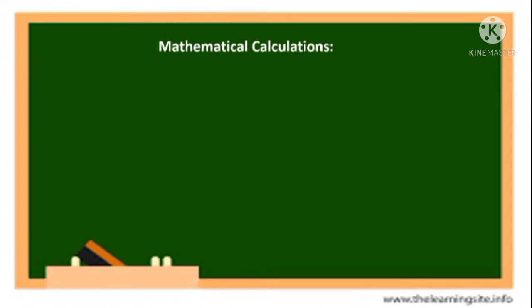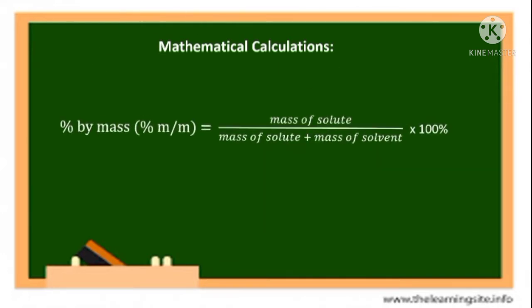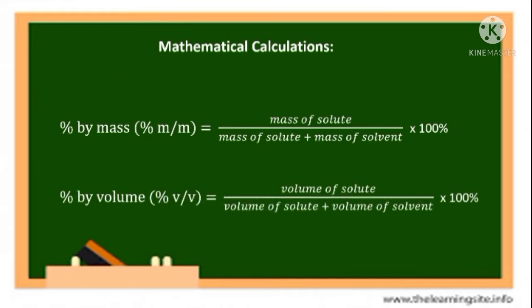We have common units that use percent concentrations with mathematical calculations. For percent by mass, the formula is: percent (m/m) equals mass of solute over mass of solute plus mass of solvent, which is the mass of solution. For percent by volume, percent (V/V) equals volume of solute over volume of solute plus volume of solvent, which is the volume of solution, times 100%.